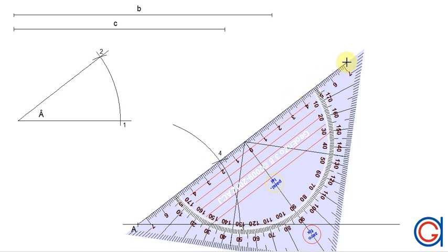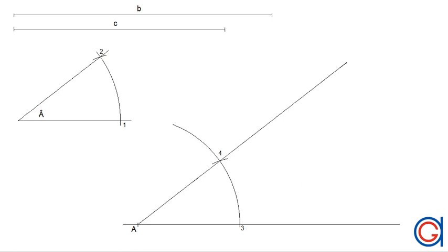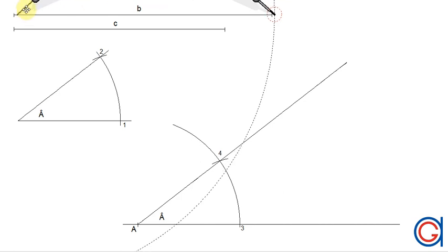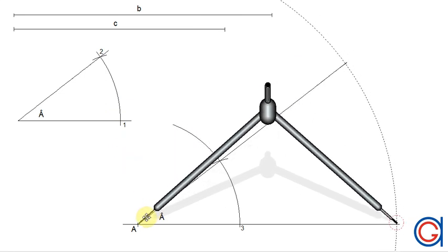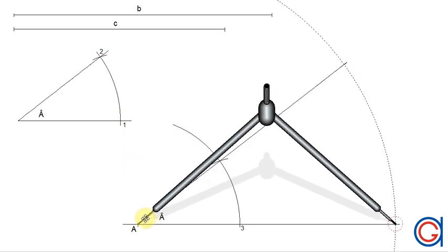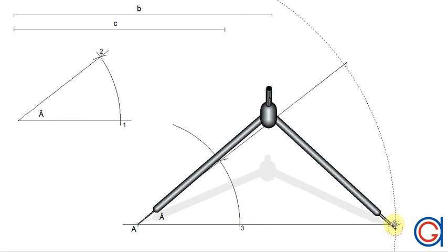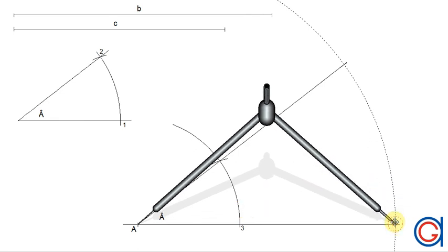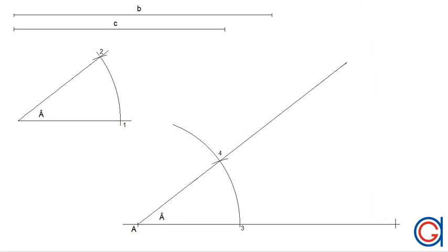We draw a prolongated line through point four as shown here. The next step is setting our compass to the given side B. We transport this length onto the horizontal line by setting our compass on point A and scribing an arc. This cuts the horizontal line at a new point which will be the vertex C of the scalene triangle that we are going to draw.